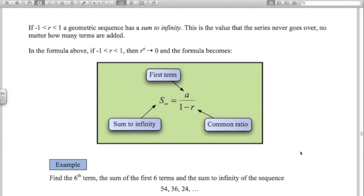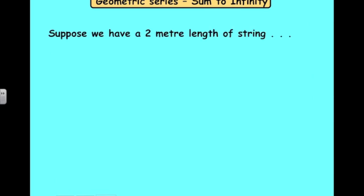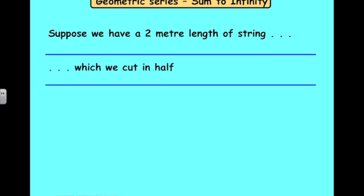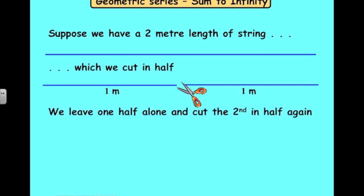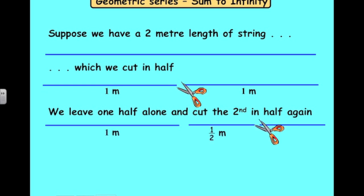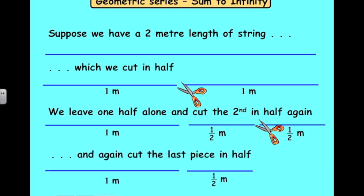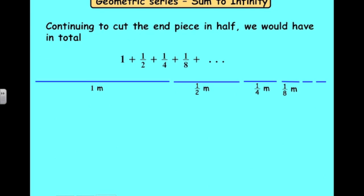If the value of r is between minus one and one, the geometric sequence has what we call a sum to infinity — that is, no matter how many terms you add up, the total never goes past a certain number. To illustrate this, suppose we have a two-metre length of string. We cut it in half, leave one half alone, and keep cutting the remaining half again and again — repeating the process indefinitely. No matter how many times we do this, we only ever started with two metres of string.